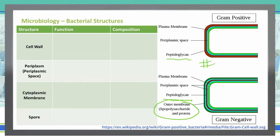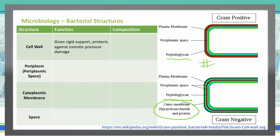The cell wall of bacteria gives it rigid support, and it helps protect it against water and osmotic pressure damage as it goes throughout its environment. It's made up of a peptidoglycan sugar backbone with a side-chain peptide that cross-links it, giving us that net-like structure.